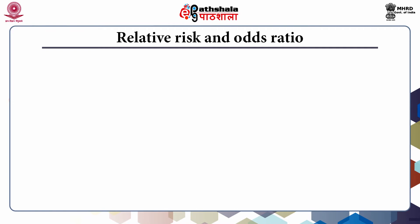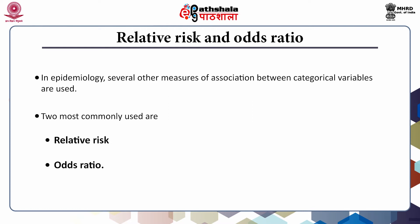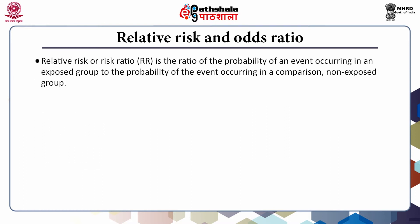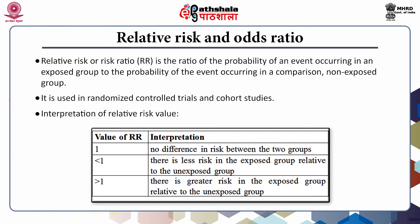In epidemiology, several other measures of association between categorical variables are used. Two most commonly used are relative risk and odds ratio. Relative risk, or risk ratio, is the ratio of the probability of an event occurring in an exposed group to the probability of the event occurring in a non-exposed comparison group. It is used in randomized controlled trials or cohort studies. If the value is 1, there is no difference in risk between the groups. If the value is less than 1, there is less risk in the exposed group relative to the unexposed group. If the value is more than 1, there is greater risk in the exposed group relative to the unexposed group.